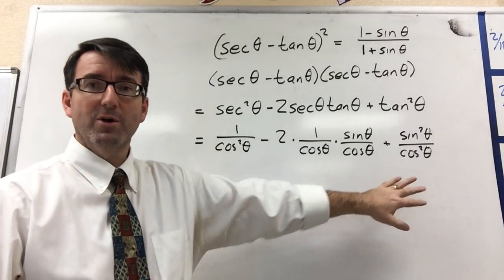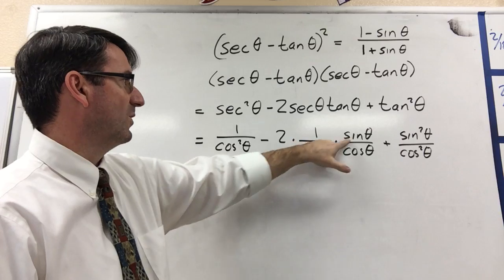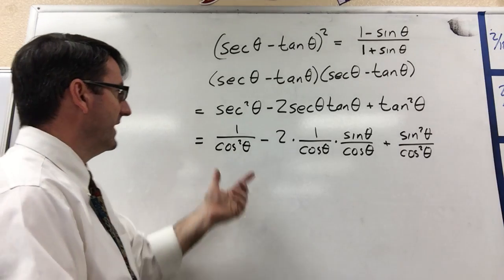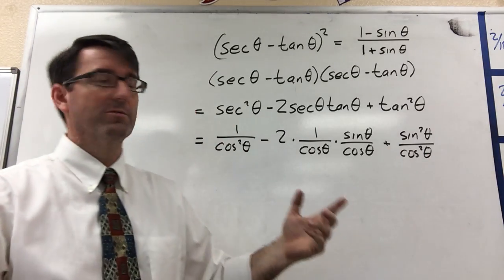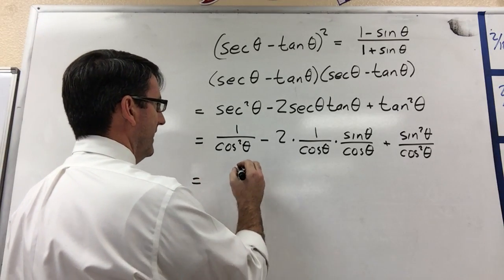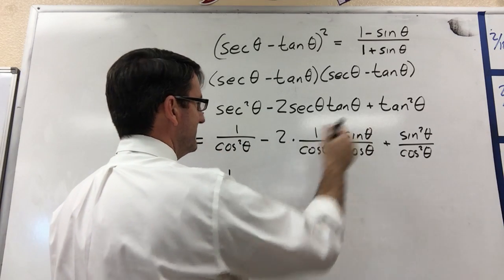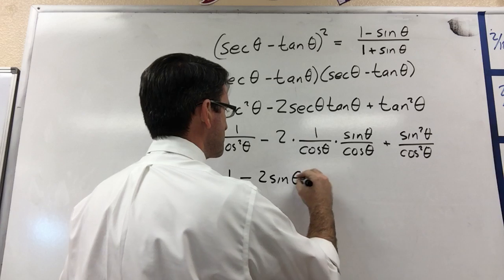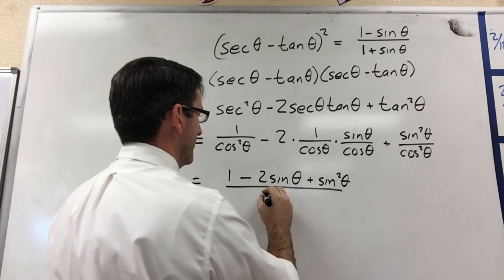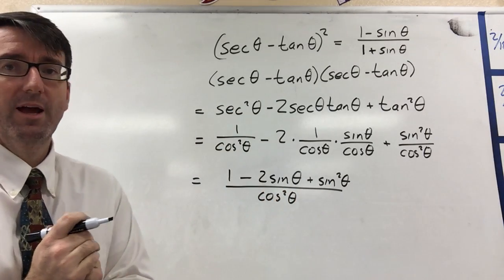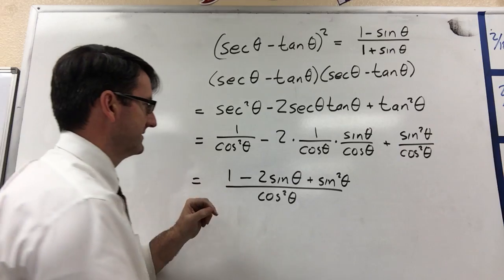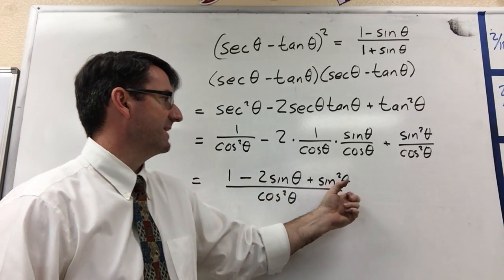Now look what's happened here. When we multiply the middle term together, we get 2 times 1 times sine theta, so 2 sine theta over cosine squared. And so we've got a common denominator already in all of these terms — our common denominator is cosine squared theta. So this is going to be equal to 1 minus 2 sine theta plus sine squared, all over cosine squared theta.